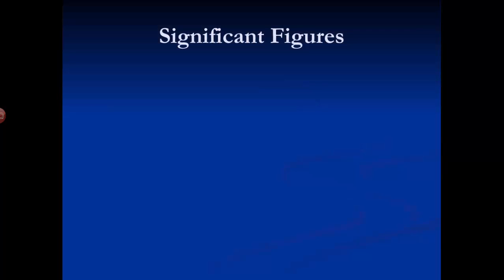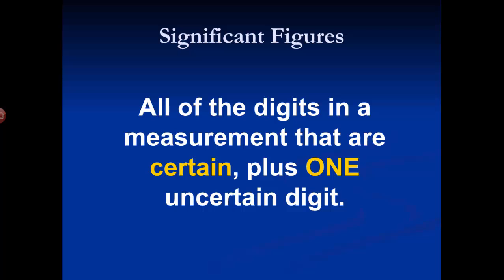There's that last digit, the one that you estimate. That uncertain digit is important, but it affects what we do with the numbers. So, the definition of significant figures: all of the digits in a measurement that are certain — you know because there are lines — plus that one last digit, the uncertain digit — all of those are significant figures.